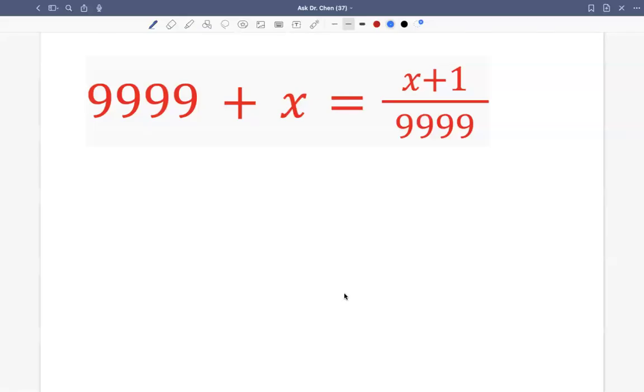Let's see this question. So this question is 9,999 plus a variable x equals to x plus 1 divided by 9,999. So the annoying thing is this big number 9,999.